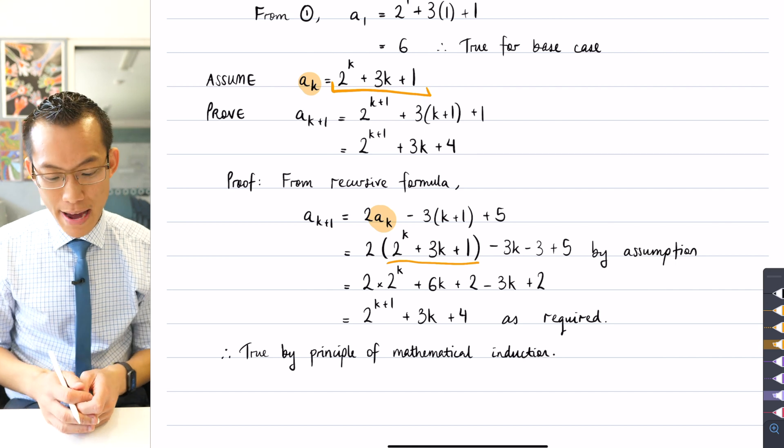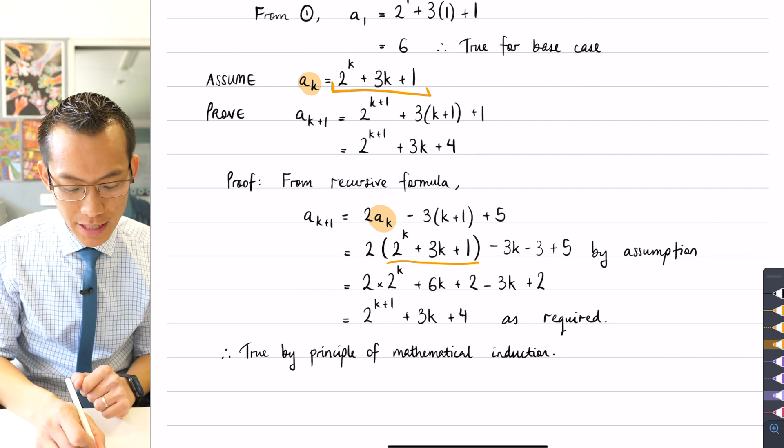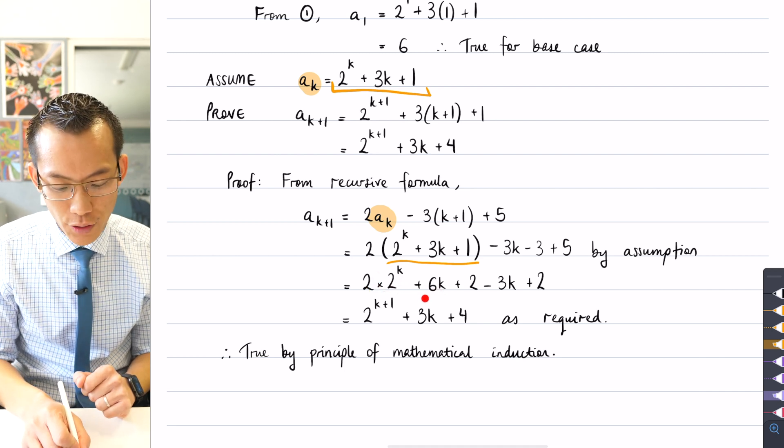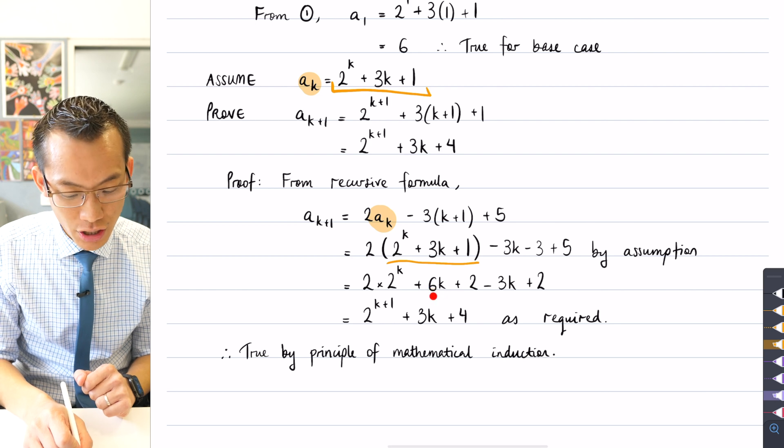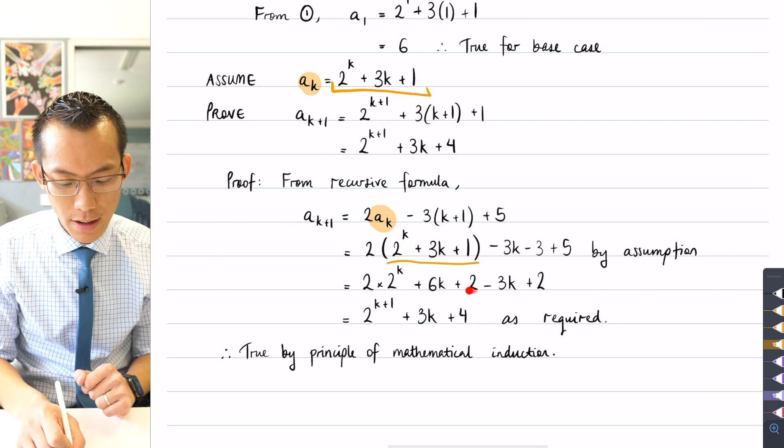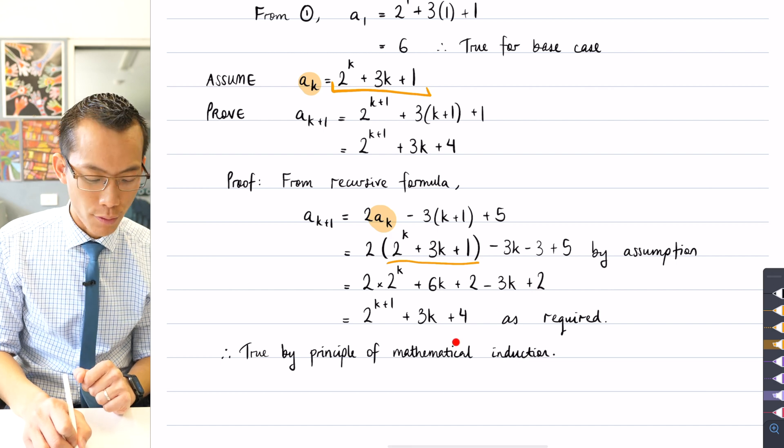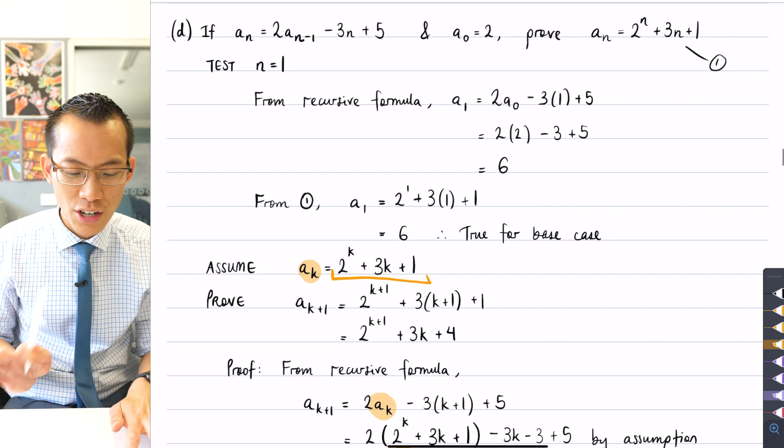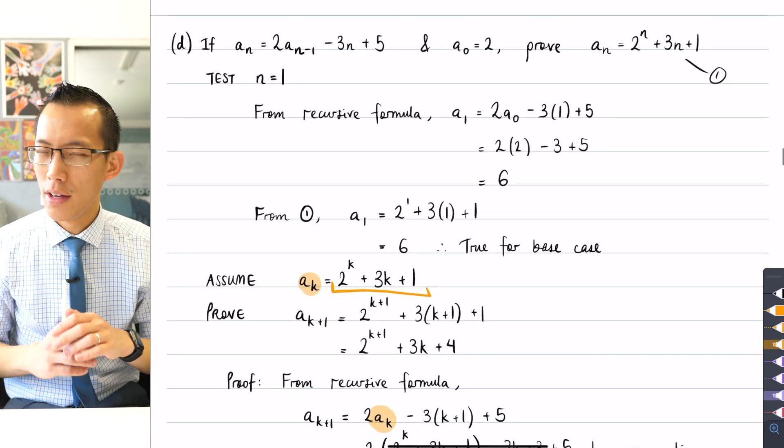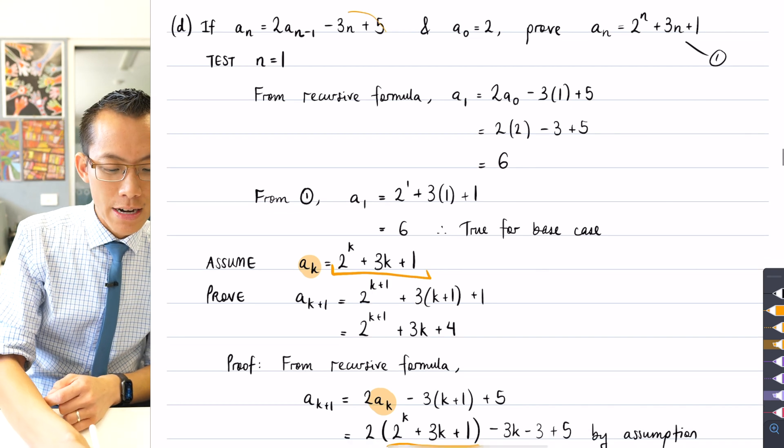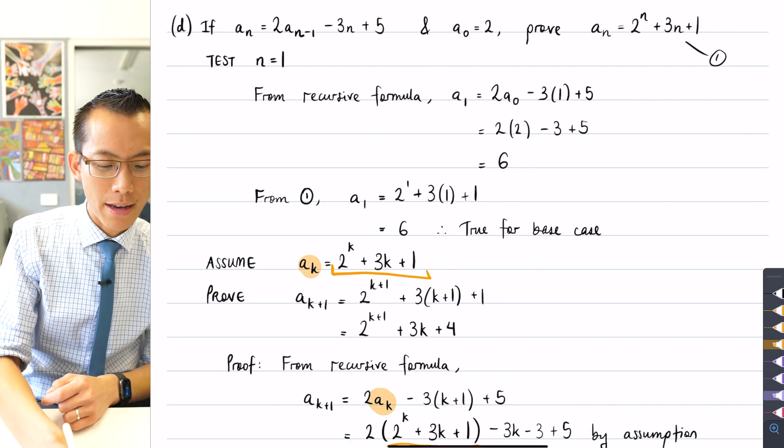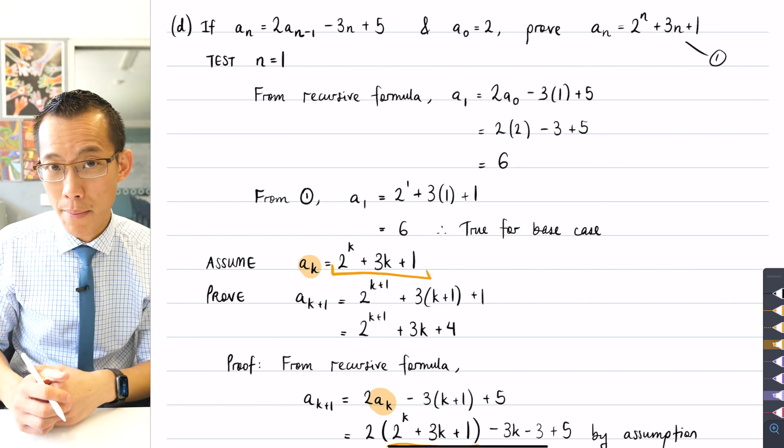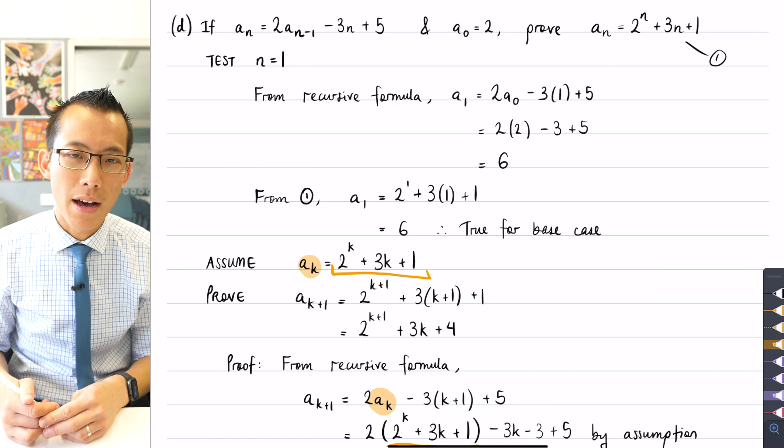Once I've done that, it's just a matter of expanding and collecting like terms. So you can see it unfolds here: all of the 2^k terms, I've got these k terms, there's 6k that comes from here minus 3k, it simplifies out, and then plus 2 plus 2 equals 4, and that's it. So really, all of the challenges were on the interpretation. The actual proof by mathematical induction itself is very straightforward, but knowing how to read a recursive formula and then incorporate that into your proof by mathematical induction—that was the only part that was tricky.